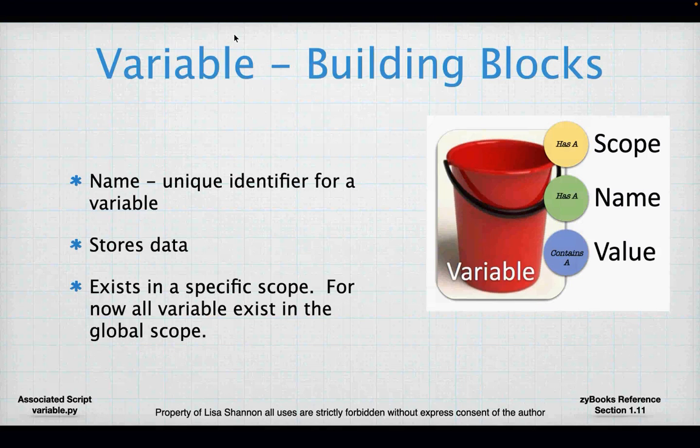The first building block of programming for Python is a variable. A variable is a place to store stuff — that's why I have a bucket on this screen. It could be a number, a sentence, or all of the room map for your game. A variable has three identifiers: it has a scope, it has a name, and it contains a value.